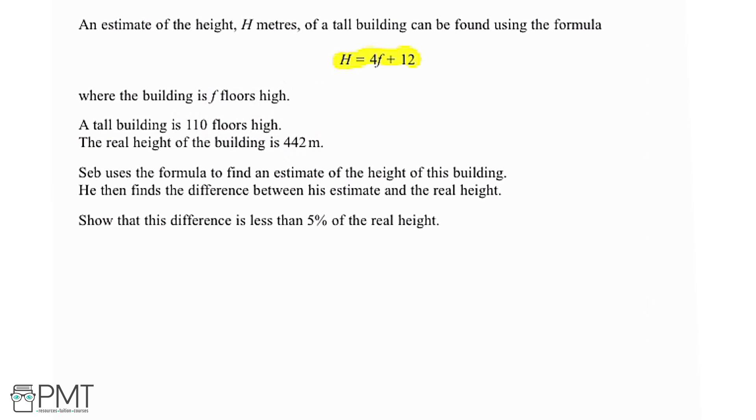Seb uses the formula to find an estimate of the height of this building. He then finds the difference between his estimate and the real height. Show that the difference is less than 5% of the real height.